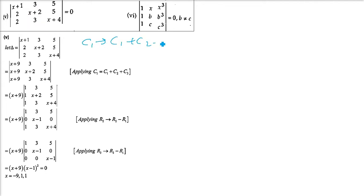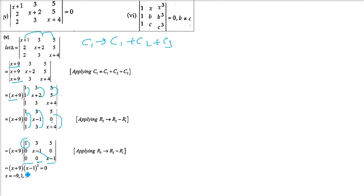This question follows the same sequence: Column 1 is changed to Column 1 plus Column 2 plus Column 3, giving X+1+1+3+5 = X+9. Taking X+9 outside gives 1,1,1. Then R2 → R2 minus R1 and R3 → R3 minus R1 gives two zeros in the first column. We get (X+9)(X−1)² = 0, so X = −9 or X = 1.